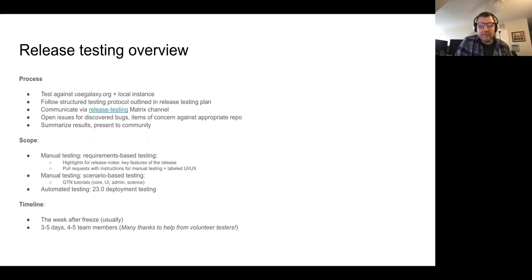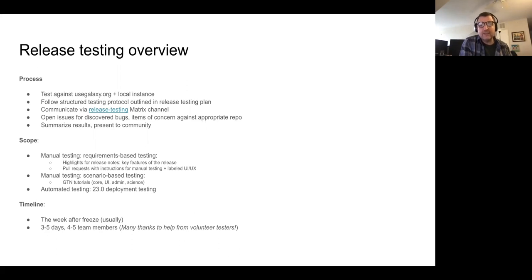The primary goals of the release testing team are really two: manual testing and automated testing activities. The goal of manual testing is essentially to test everything we can, stray off the happy path, try to do whatever a user might accidentally do, and discover bugs which are very difficult to discover by automated means. Whenever we find one, we open an issue on GitHub, and at the end, we summarize the results and present them to the community.